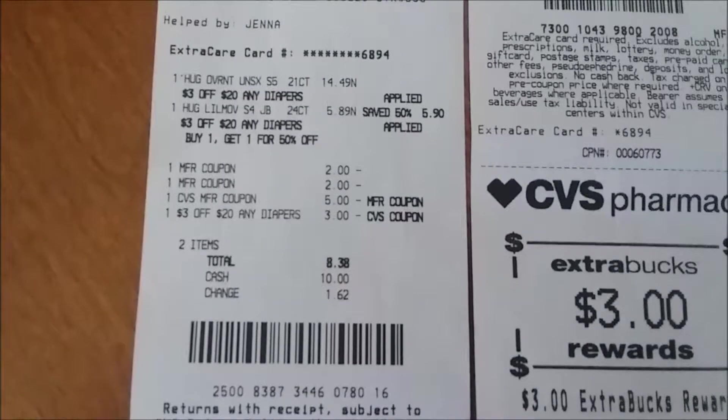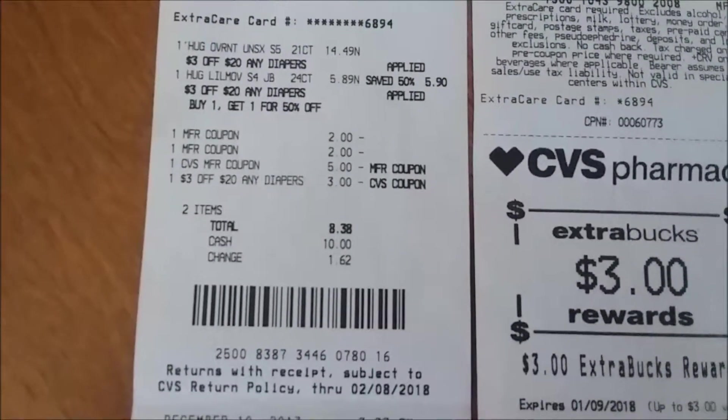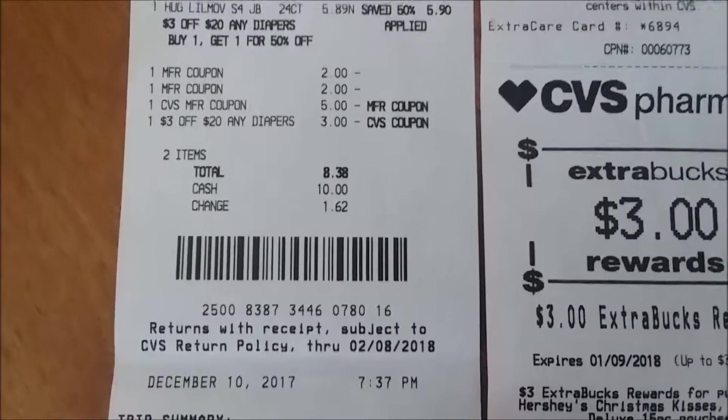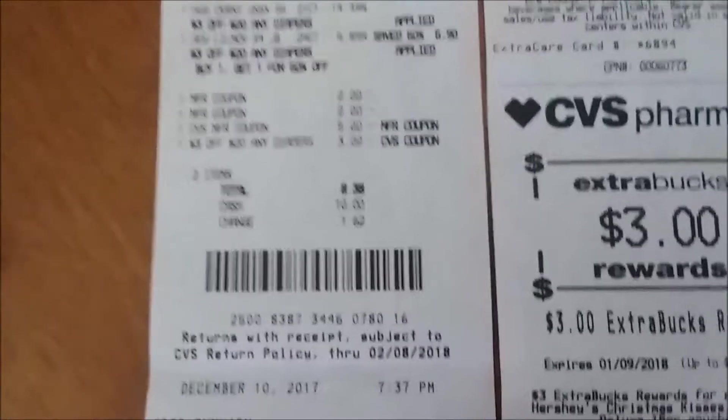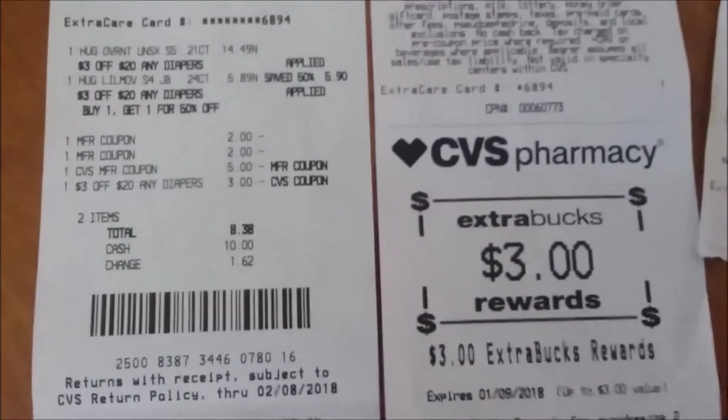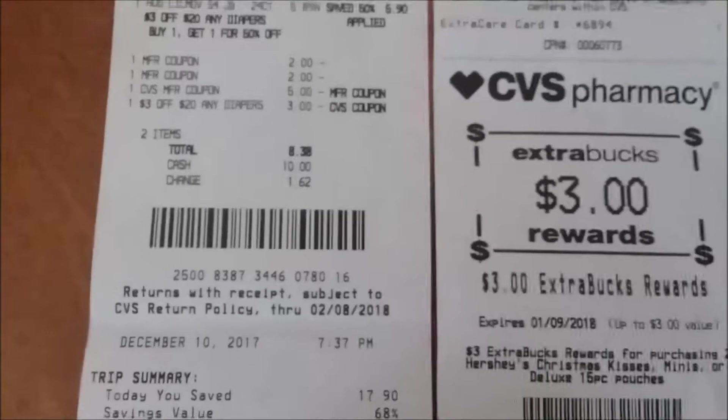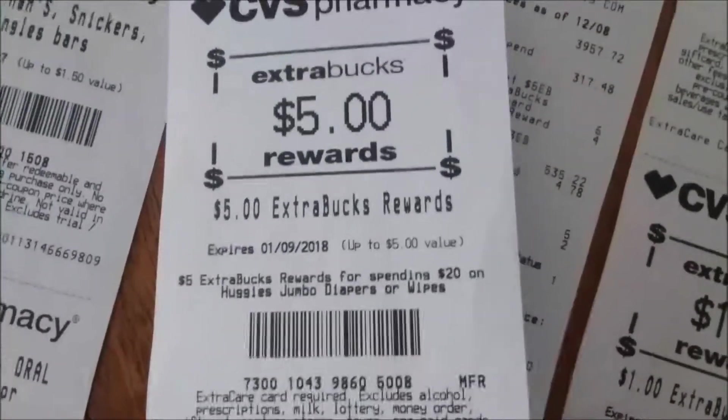Then I had a $5 ECB which I rolled and then I had a three off of 20 CRT which brought it down to $8.38 for two packs of diapers. For people that are just starting out couponing that is an amazing deal for two packs of diapers, $8.38, plus I got back a $5 ECB for the diapers. So here's my ECB.